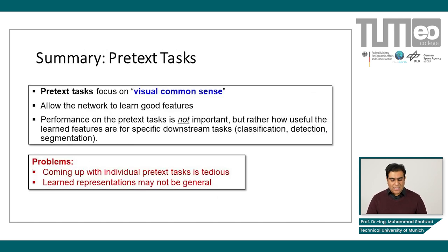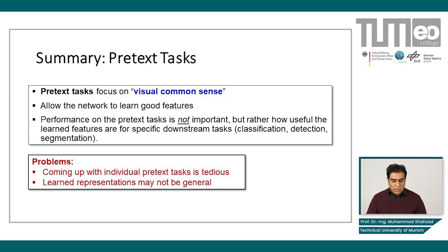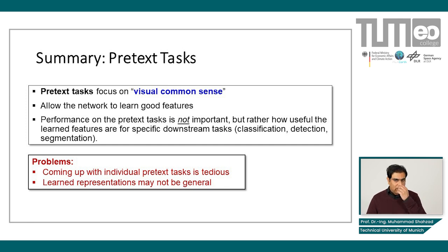To summarize pretext tasks: pretext tasks focus on visual common sense and allow the network to learn good features. Performance on pretext tasks is not important, but rather how useful the learned features are for specific downstream applications such as classification, detection, and segmentation. They have proven to be really good in a vast variety of applications, but there are some small problems. Coming up with individual pretext tasks is tedious, and there are many different pretext tasks in the literature. Also, the learned representations may not be general.